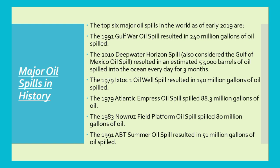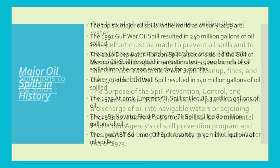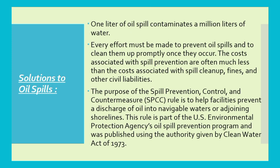Major oil spill accidents include the Gulf oil spill in 2010 from the Deepwater Horizon, the 1979 spill, and those in 1983 and 1991. In total, around 51 million gallons were spilled into the ocean. Notably, just one liter of oil has the ability to contaminate millions of gallons of water — so we can imagine the disastrous effects.